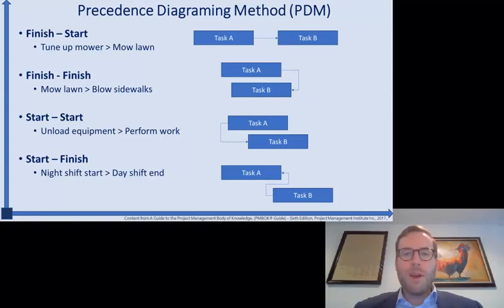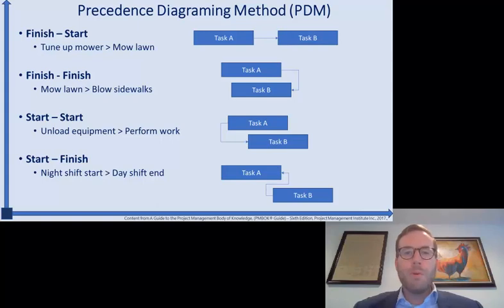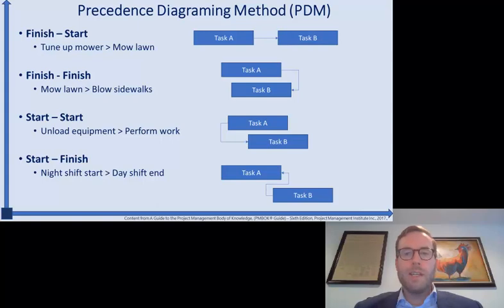In today's FactSnack, we're going to talk about activity relationship types on your project schedule. This comes out of something called the Precedence Diagramming Method — a technique within project schedule management for putting our project activities or tasks into sequence, into their logical order based on their dependencies. In order to put our activities into a logical sequence, we need to understand the relationships between two activities.